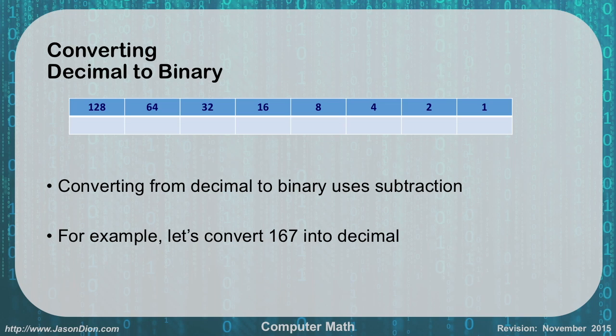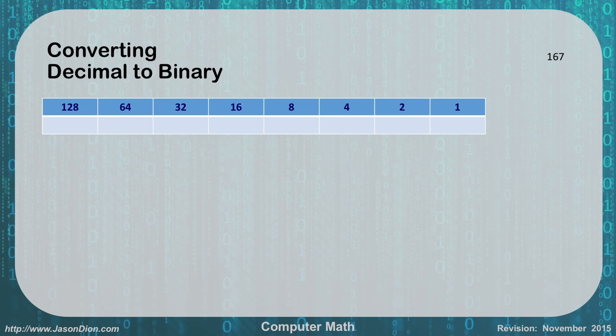Well, if we have 167, we can take out 128. So here we're going to take 167 minus 128 is 39, and I put a 1 in the 128 column.